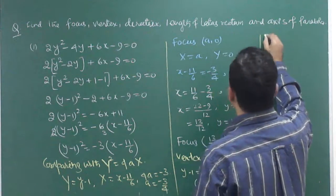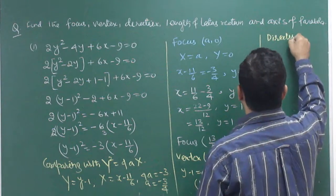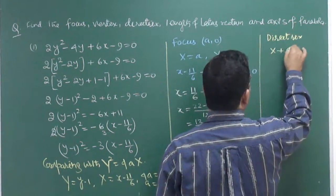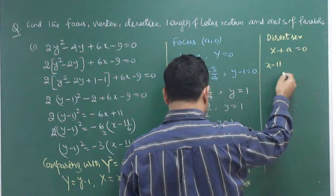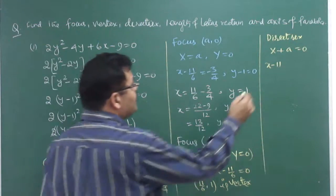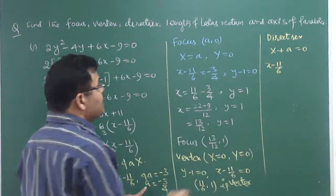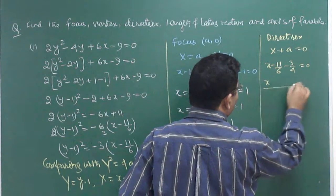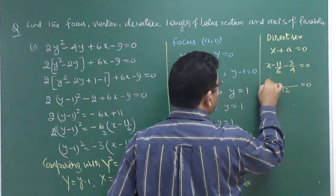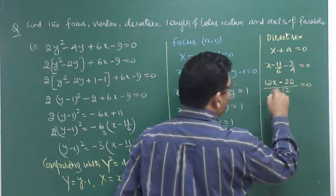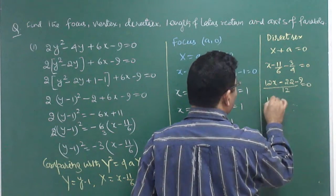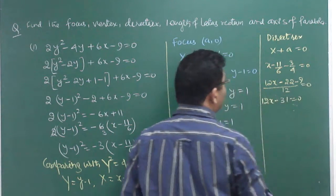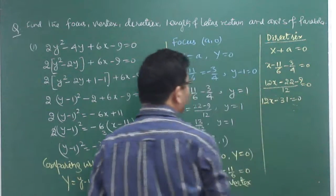The directrix for Y² = 4aX is X + a = 0. So (x - 11/6) + (-3/4) = 0. Taking LCM of 12: 12x - 22 - 9 = 0, that is 12x - 31 = 0. This is the equation of the directrix.